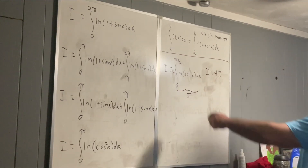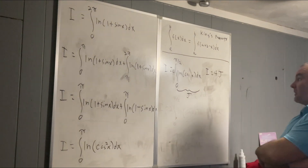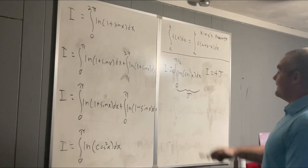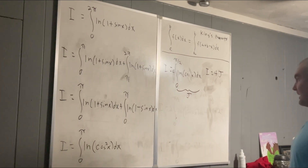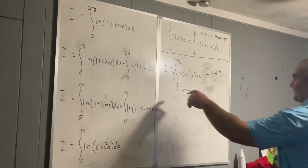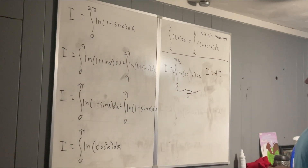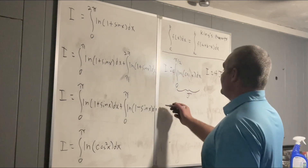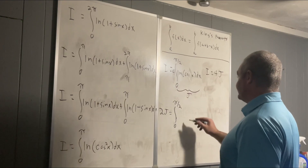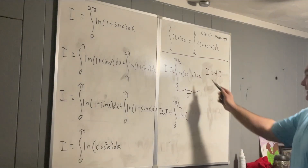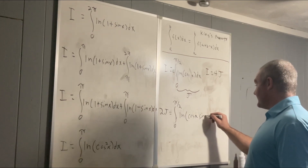If j equals the integral from 0 to π/2 of the natural log of cosine x dx, then it also equals the integral from 0 to π/2 of the natural log of sine x dx by King's property — since cosine(π/2 − x) equals sine x. So 2j equals the integral from 0 to π/2 of the natural log of cosine x times sine x dx.